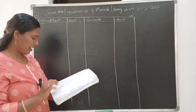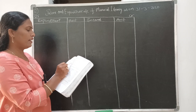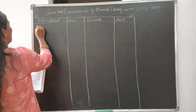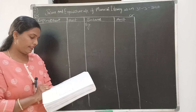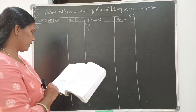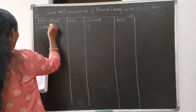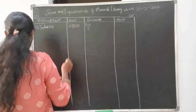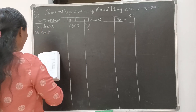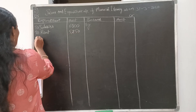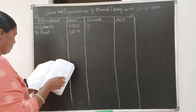I'll draw the format. First we start with the expenditure side. Salaries — is there any adjustment related to salary? No. There is no adjustment, so simply write down salaries: 6800. Next, rent: 5250. Coming to investment — investment is an asset, so this should be shown in the balance sheet. Coming to postage.